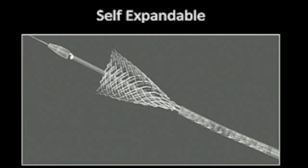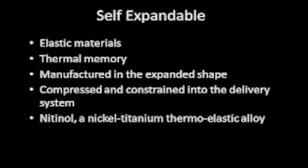A self-expandable stent is designed to go over a wire inside a sheath. As you bring back the sheath, the stent automatically deploys inside the vessel — nothing else is required to open it up. The properties of a self-expandable stent include elastic materials with thermal memory: when manufactured, it's made at a temperature that causes it to automatically return to that same design when deployed in the vessel. Most are made of nitinol — nickel-titanium — a thermo-elastic alloy.